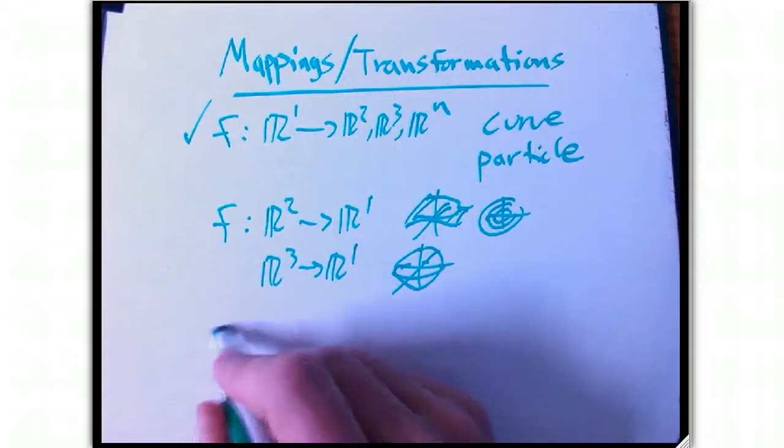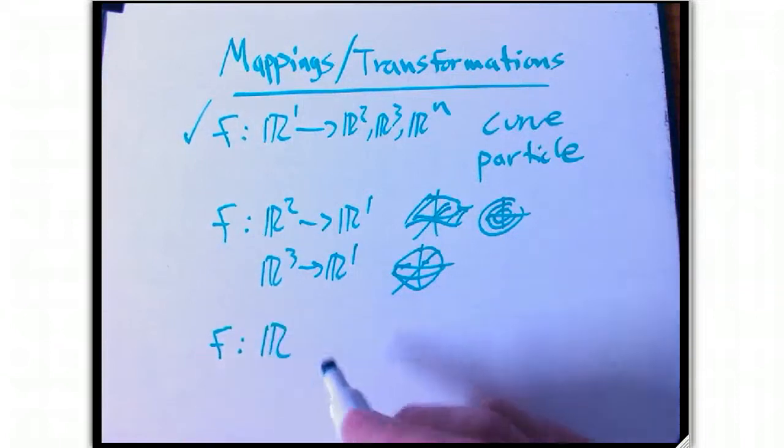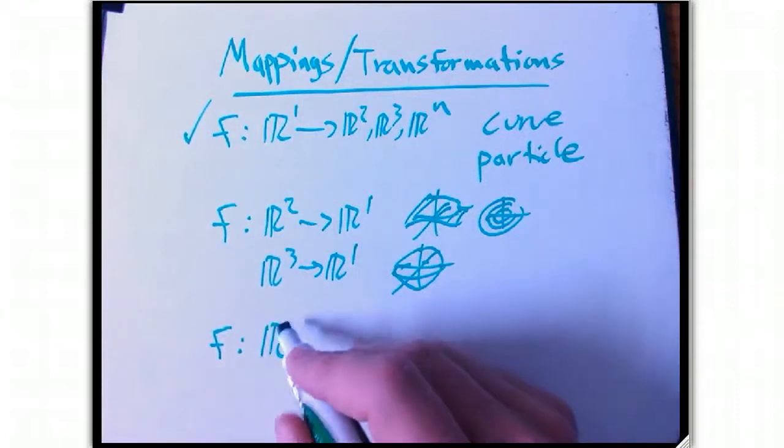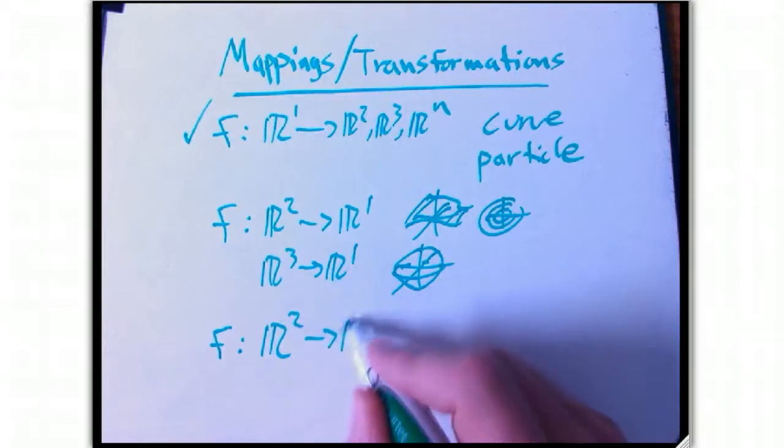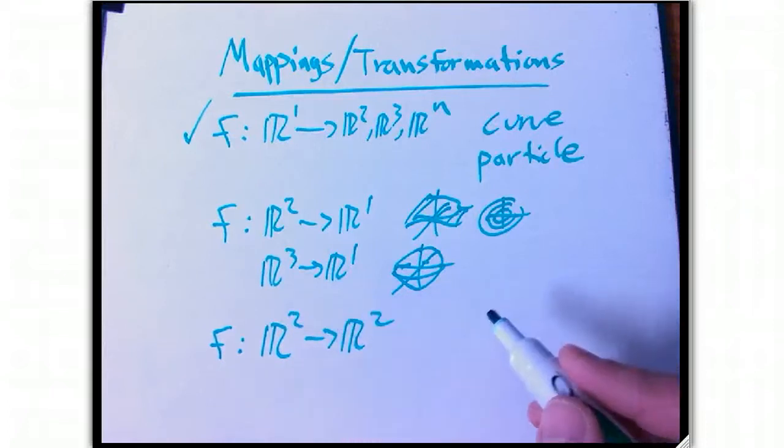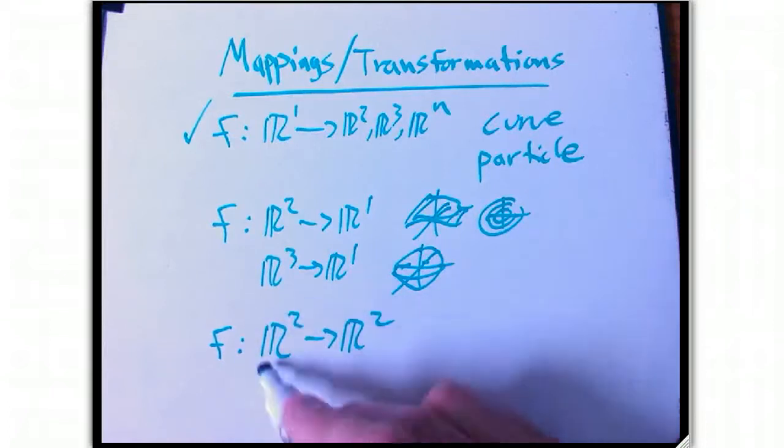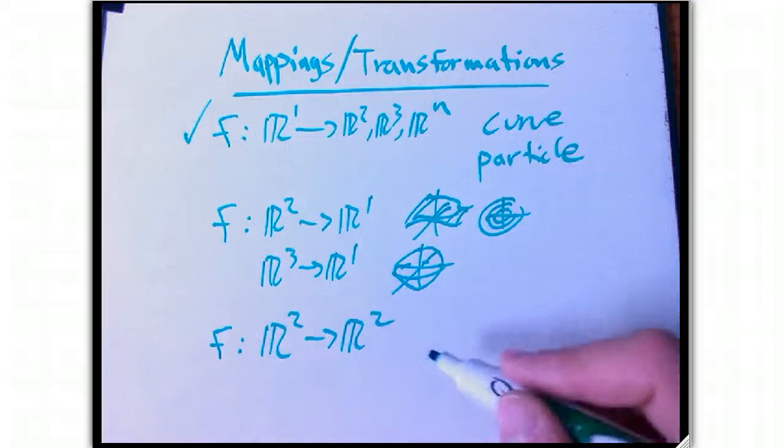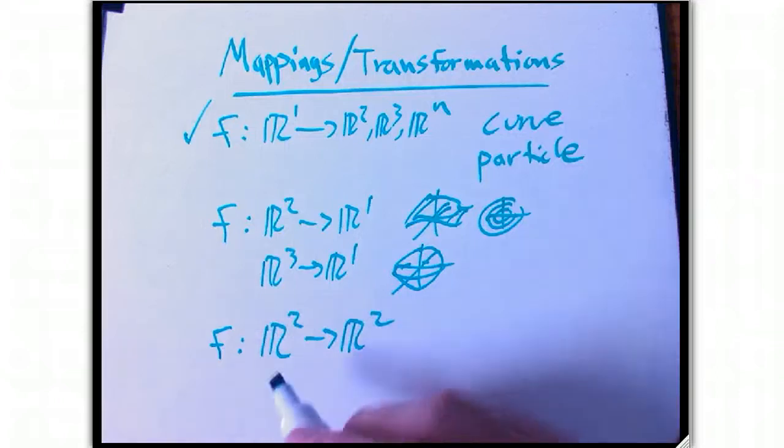What we haven't done very much of yet is a function from more than one input to more than one output. So the simplest case would be like from R2 to R2, taking something in a plane to something in a different plane, or sometimes you can think of it as the same plane.